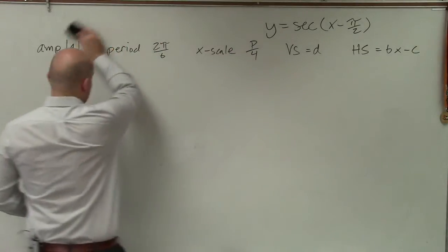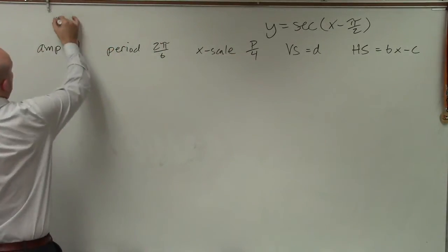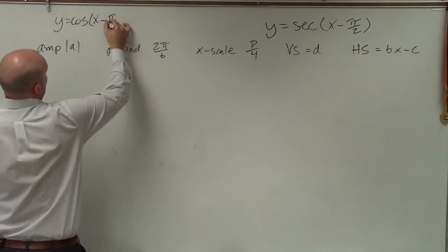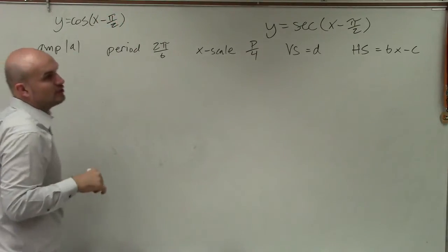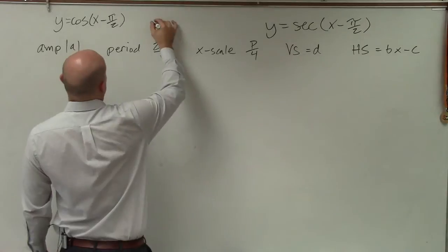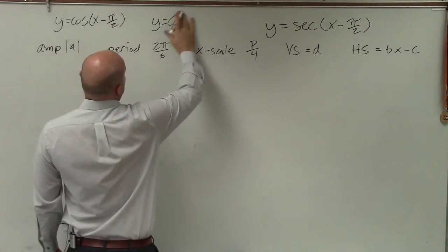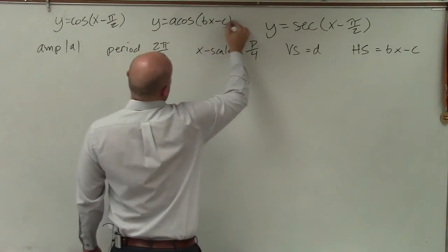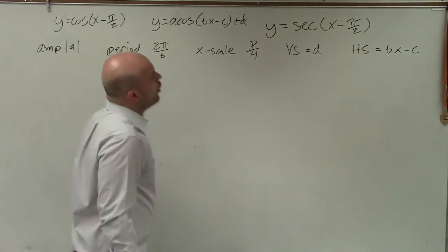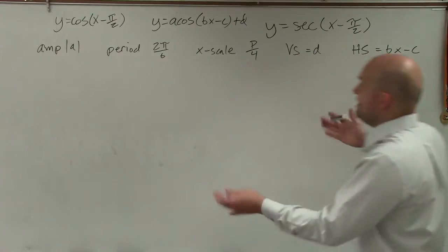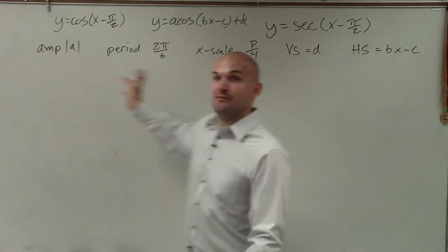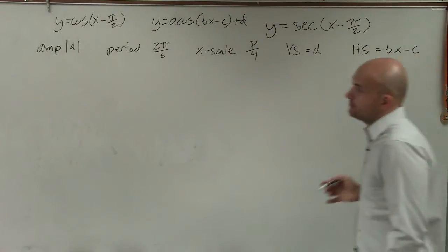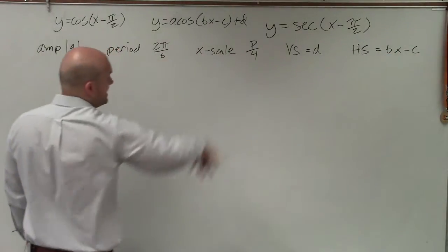Well, let me actually write this over here. So to determine all this information, we have a general rule for all of our trigonometric functions. And I'll write it in for cosine. y equals a times cosine of bx minus c plus d. OK, so that's where my a, b, and c came from for me to figure out all this information. So before I even start graphing, I want to make sure I can figure out all this information for cosine. We'll get to secant in a second.